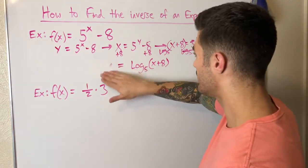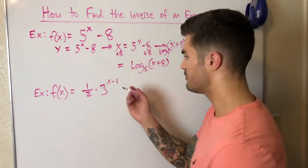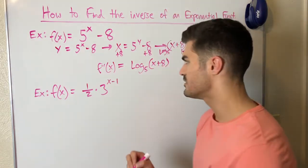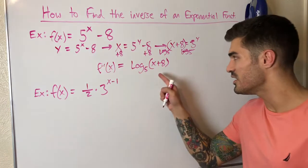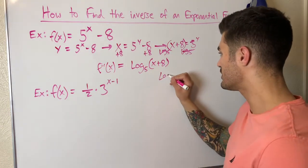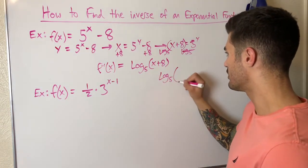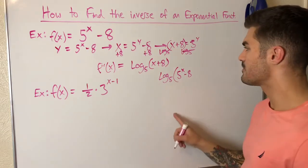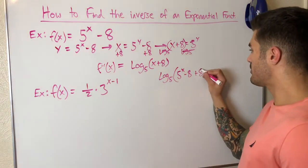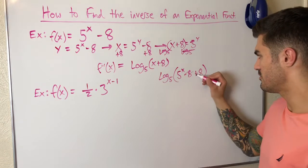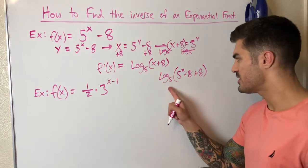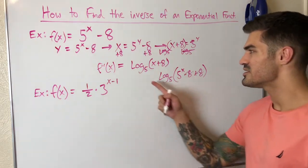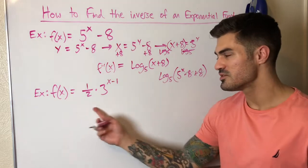I'll rewrite y using inverse notation — f to the negative 1, which means inverse. To verify: I plug 5^(x) − 8 into the inverse for x. The minus 8 and plus 8 cancel, leaving log base 5 of 5^x, which simplifies to just x. So this is definitely the inverse.